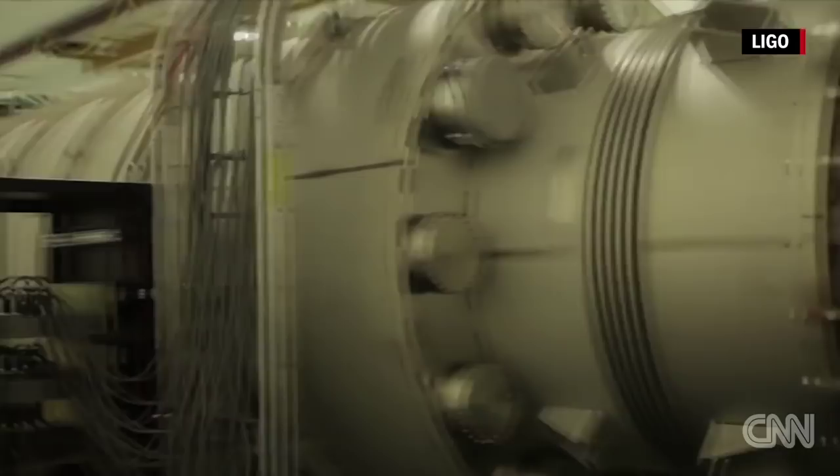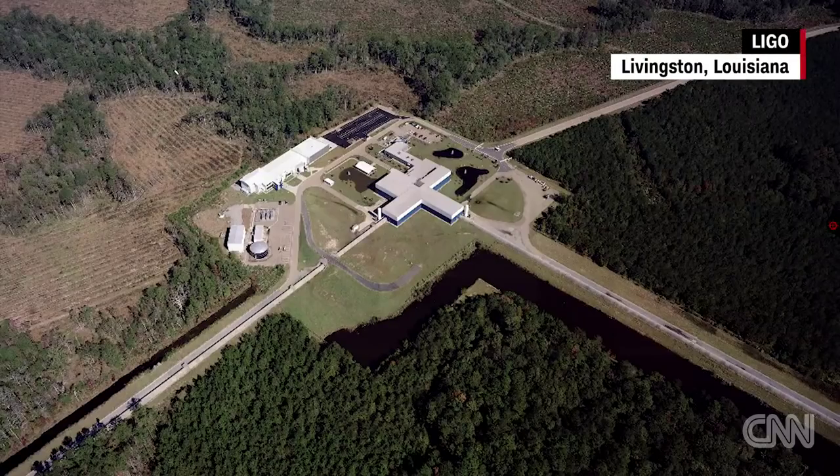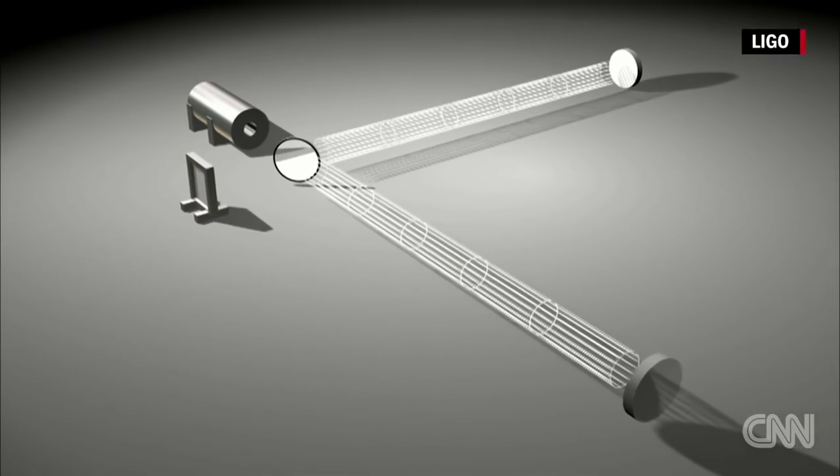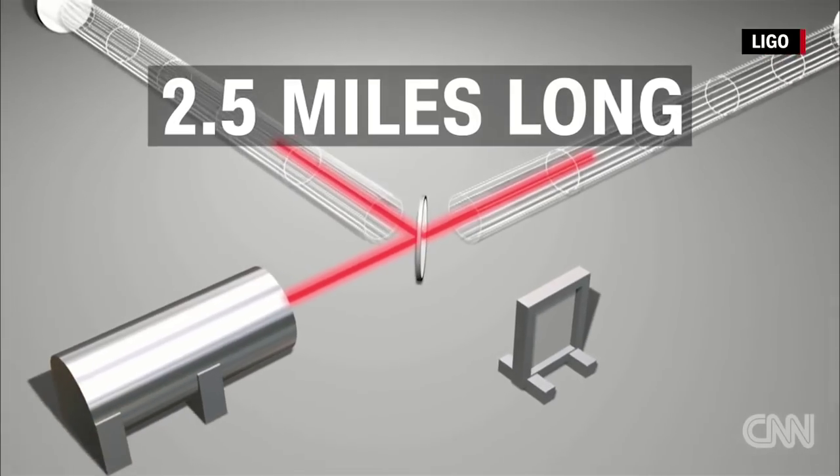MIT and Caltech operate twin detectors located in Livingston, Louisiana, and Hanford, Washington. The detectors are shaped like an L, and they shoot lasers down vacuum tubes that are 2.5 miles long.